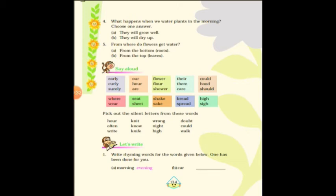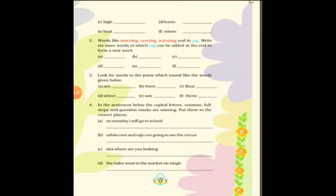Next, write rhyming words for the words given — one has been done for you. Morning–evening, car–far, high–sky, heat–beat, boots–shoes or moves, wear–hair. You will get the PDF of all the notes, so don't worry. Now for words like morning, evening, watering — these end in -ing. Write more words to which -ing can be added to form a new word, like lighting, fighting, burning, amazing, killing. Many words end in -ing; find and write them in your textbook.